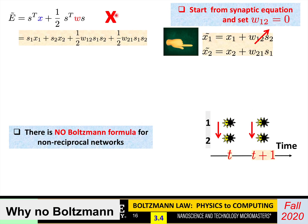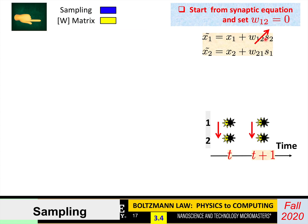So what you have to do is forget about energy, and just start from a synaptic equation. Say that x1 tilde is equal to the bias term plus the weight term, where the weight term acts only one way — there is something from s1 that influences neuron 2, but nothing from neuron 2 that influences neuron 1, so you get rid of that term. Then you can apply the sampling method or the W transition matrix method to the problem.